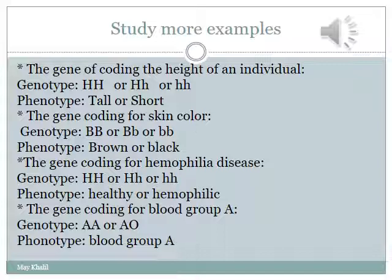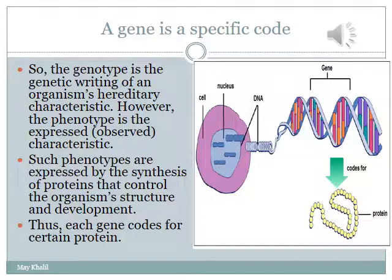There is also a very important gene that codes for our blood group. For example, blood group A could have a genotype of AA or AO, and in this way the individual is of blood group A. When we say a gene, we say it codes for a certain characteristic or certain information — which is the phenotype.